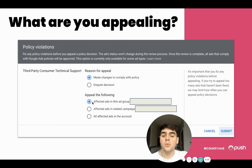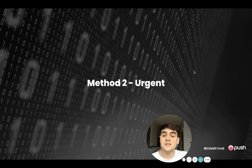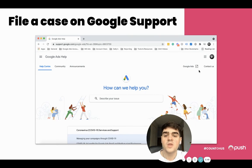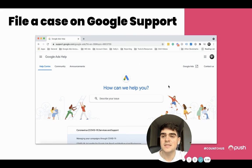Then you decide what you want to appeal — do you want to appeal it in the ad group, in the related campaign, or all ads in the account? That's the first method. The second method is on a more urgent basis. You can go into Google Ads Help and file a case from there. That will go through to someone from the Google team to review.